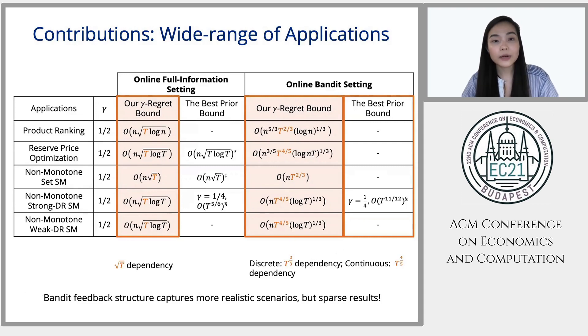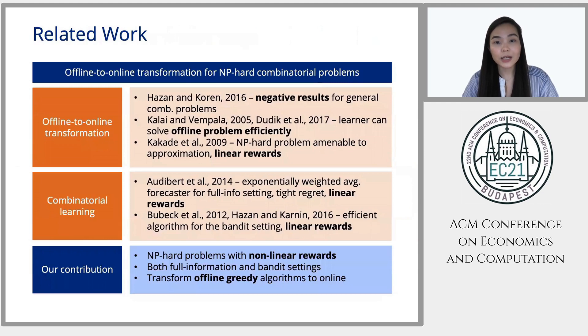Now I will go quickly over some related works. In the area of offline to online transformation, Hazan and Karin presented a negative result saying that no offline to online framework can exist for general combinatorial problems. Then Kalai and Vempala and Dudik et al, they presented an offline to online framework for offline problems that can be solved efficiently. Then Kakade et al also provided a framework for offline problems with linear rewards. In terms of combinatorial learning literature, previous works mainly focused on linear rewards. On the other hand, we focus on NP-hard problems with non-linear rewards in both bandit and full information settings. So in particular, we don't need the offline problem to be efficiently solvable, but we narrow the space of the general combinatorial problems by only looking at the problems that admit offline greedy heuristics.